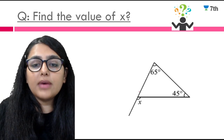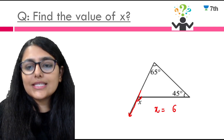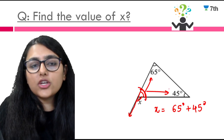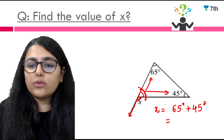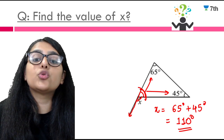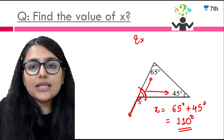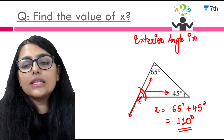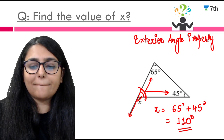Find the value of x in the following. We have extended one side, so x is our exterior angle. By the exterior angle property, x = 65 + 45 degrees. In your exam, always mention that you are using the exterior angle property — this tells the examiner that the measure of the exterior angle equals the sum of interior opposite angles.